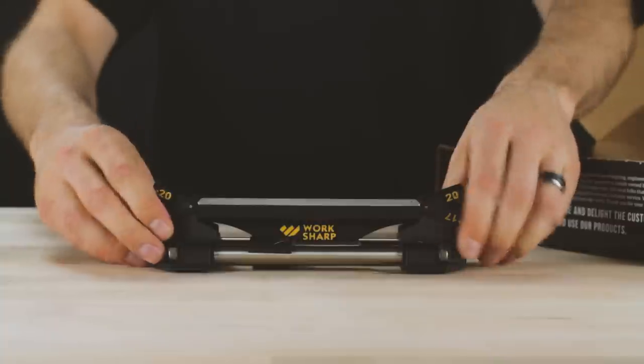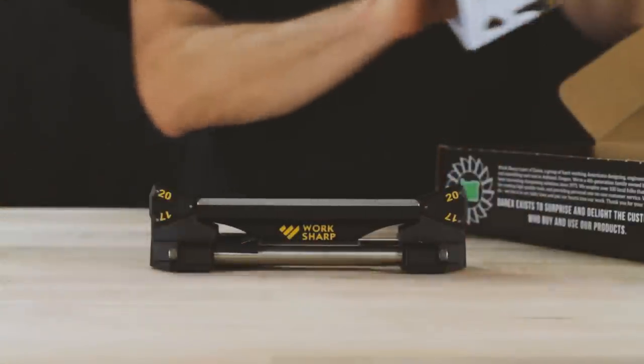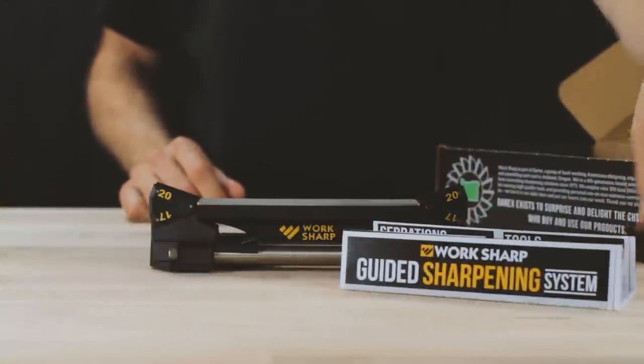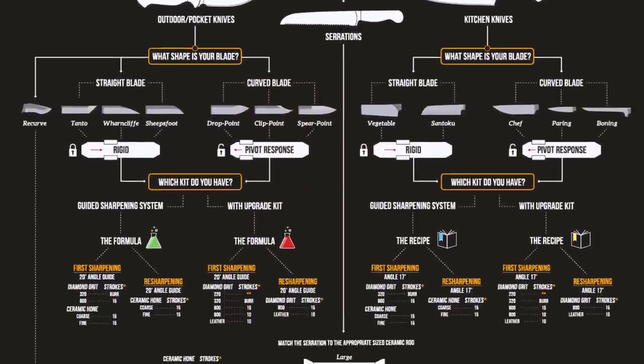Move the slide lock to the unlocked position and you are ready to sharpen. Reference your quick start guide for more details and instruction about sharpening specific types of knives and abrasive and angle selection.